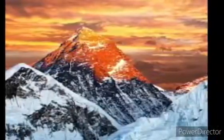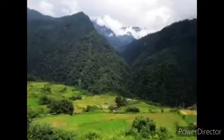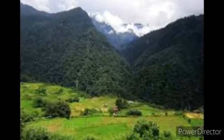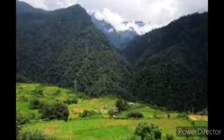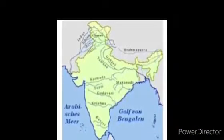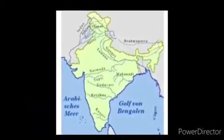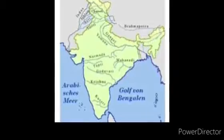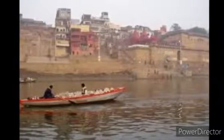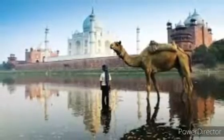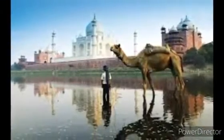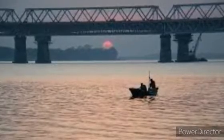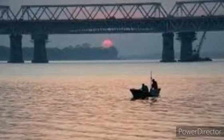The peaks are covered by snow and they look most beautiful. The lower slopes of the mountains are covered with dense forest. Not only that, many of the important rivers of India rise in the Himalayas — the Ganga, the Yamuna, and the Brahmaputra start from the Himalayas and flow through the northern plains.